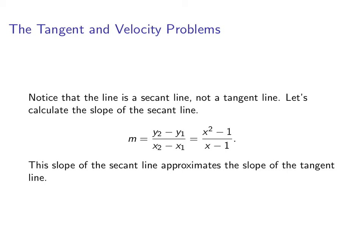Now this slope of the secant line approximates the slope of the tangent line. If that point Q that we picked is close to P, then it's going to be a pretty good approximation. That secant line will be a very good approximation for the tangent line.